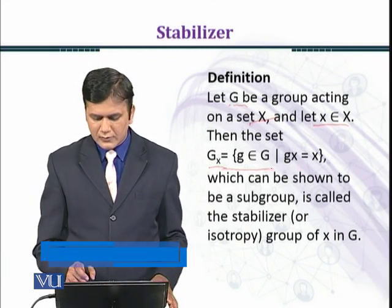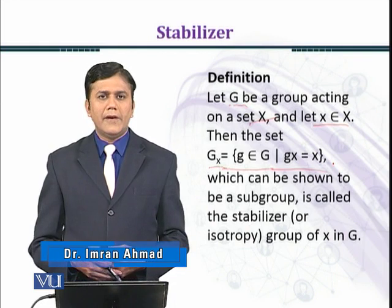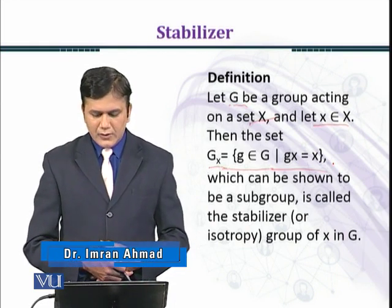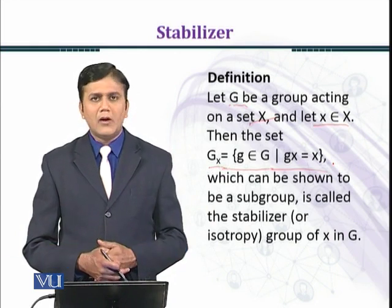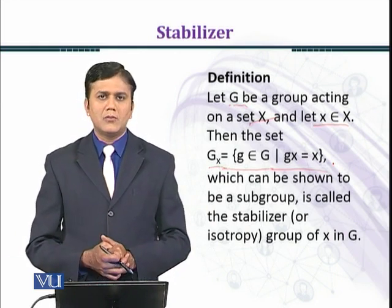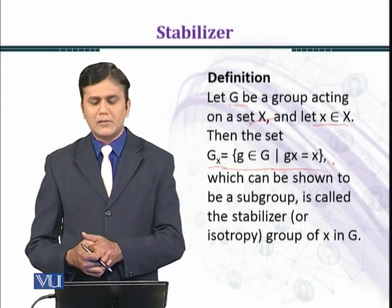So G_x is a set containing all those elements of G which map x to x. That is, when you multiply g with x, you get x itself.